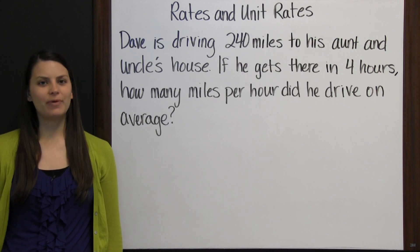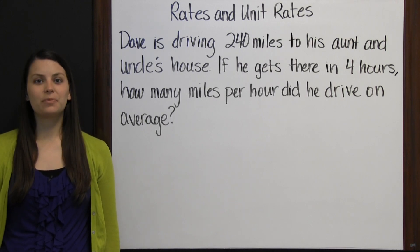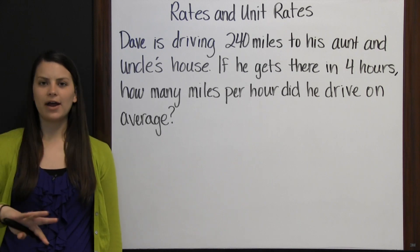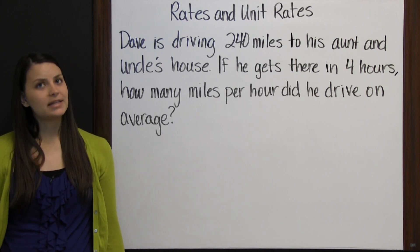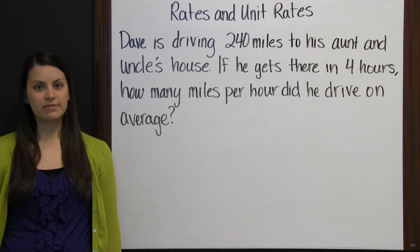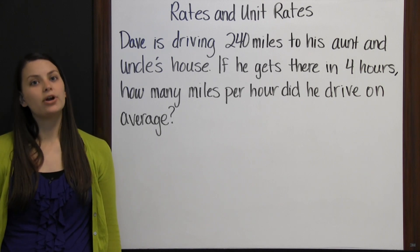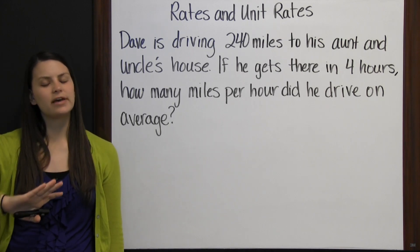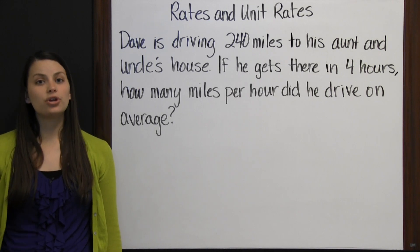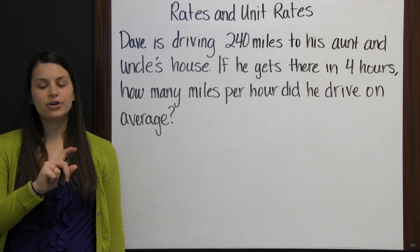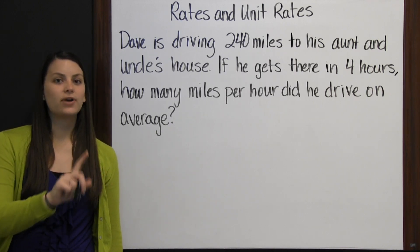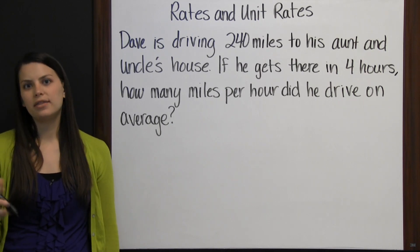Rates and unit rates. Ratios are considered rates when they compare two different units, like miles per hour or cost per ounce. A unit rate is one in which the numerator of the fraction is compared to a denominator of one unit. That way you can tell how much just one ounce of something costs. You'll see unit rates a lot at the grocery store next to the price of an item.